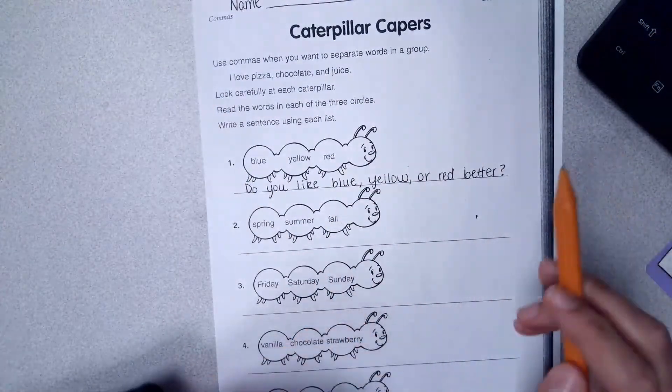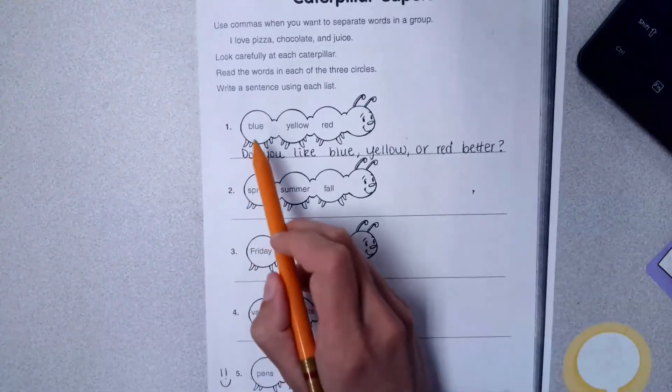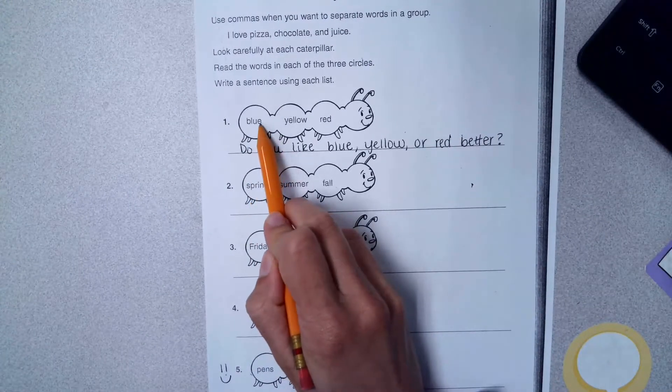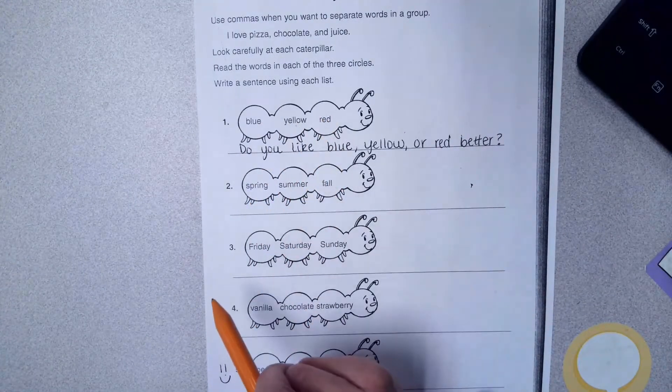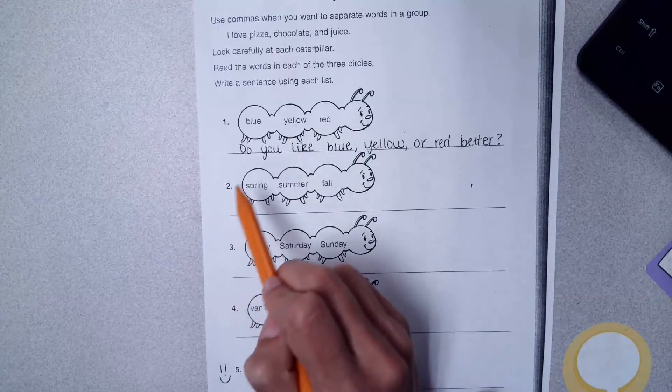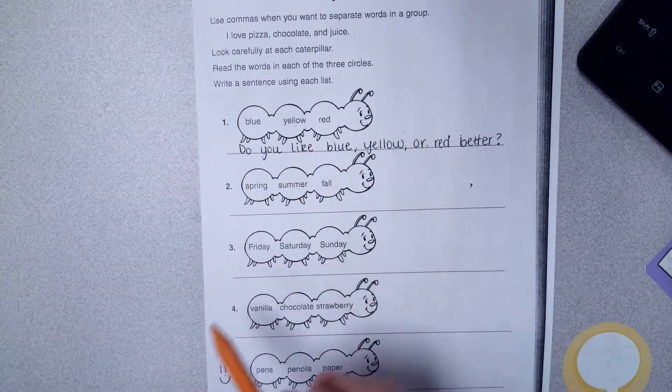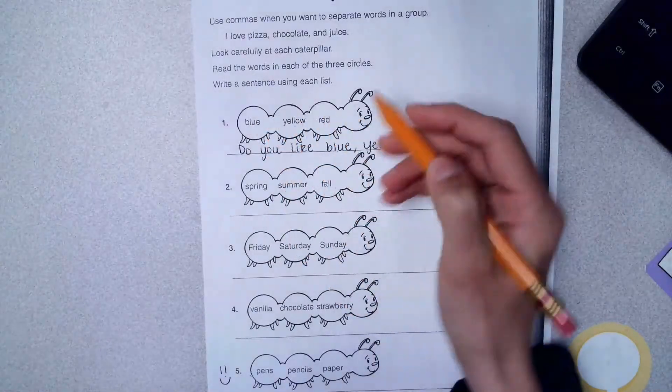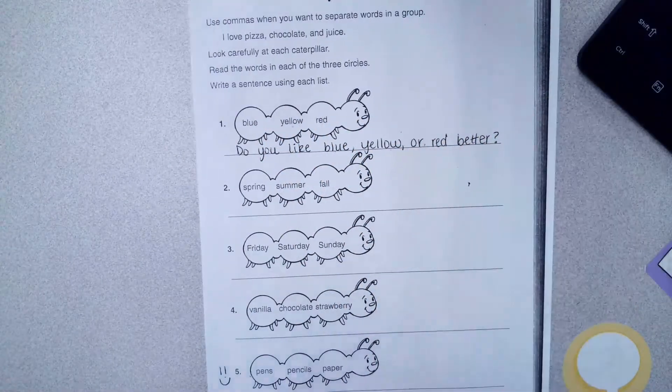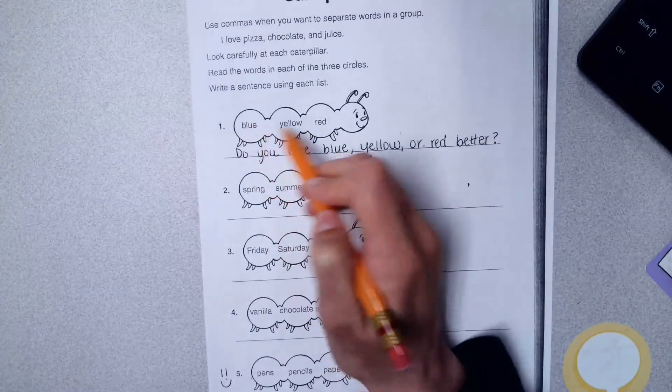So I gave you an example for number one. For number one I have blue, yellow, or red. So I said, 'Do you like blue, yellow, or red better?' And between these words that are listed, I put a comma. You should put a comma in between your words.